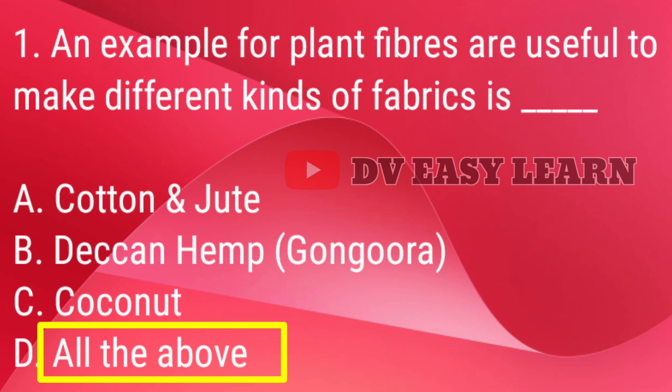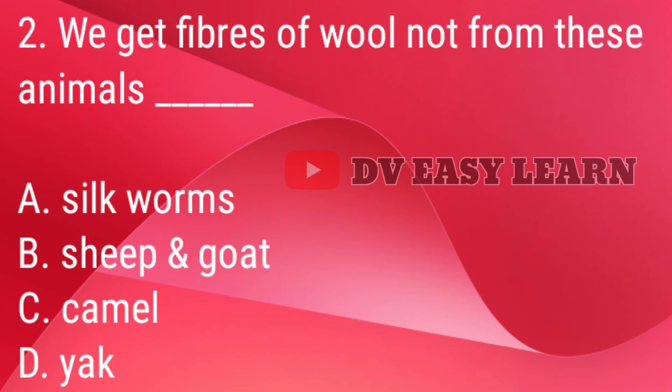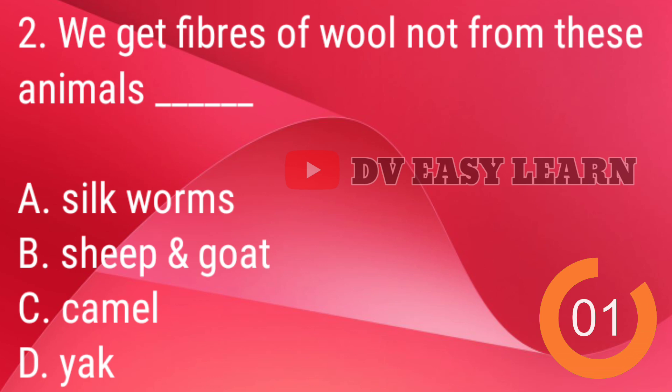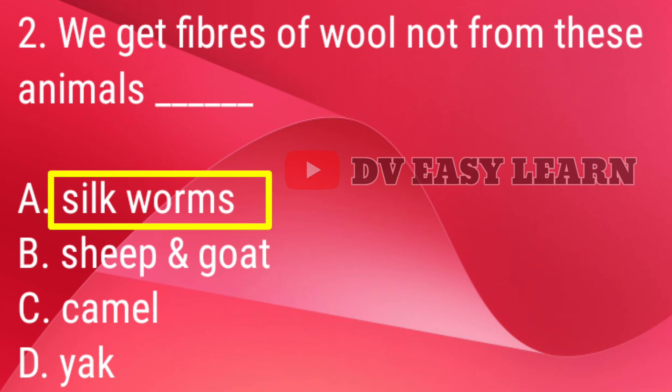Q2. Cotton and Jute, Dekken, Hemp, Coconut — we get fibers of wool not from these animals. Correct answer: Silkworms.